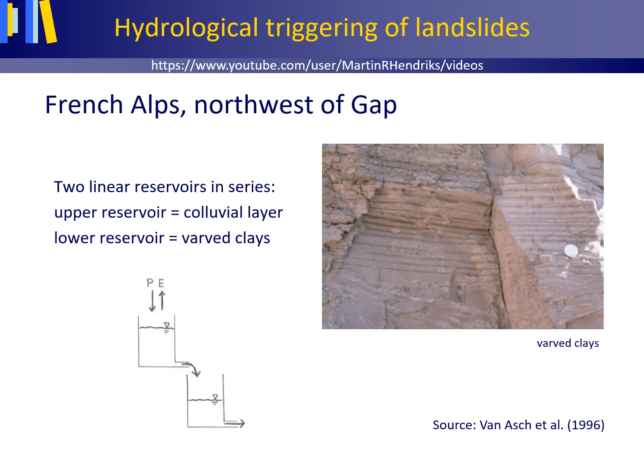Van Asch and others used precipitation data over a 30-year time period and two linear reservoirs placed in series to represent the colluvial cover overlying the varved clays. Thus, the upper reservoir representing the colluvial layer is replenished or recharged by precipitation, whilst water outflow from the upper reservoir is taken as water inflow to the lower reservoir representing the varved clays.